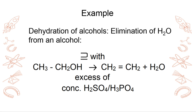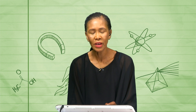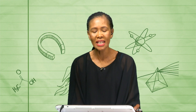Here we have an example: the dehydration of alcohols. What is eliminated? You eliminate water from the alcohol. We have an alcohol, and through concentrated sulfuric acid or concentrated phosphoric acid — sulfuric acid acts as a dehydrating agent — it removes water from the substance. That is why water is one of the products. An alcohol with concentrated sulfuric acid will have water eliminated, and therefore an alkene is formed.